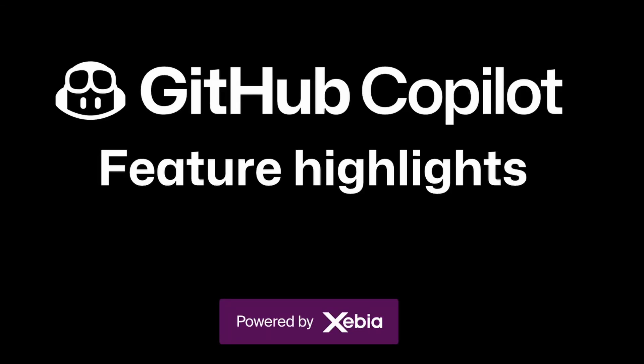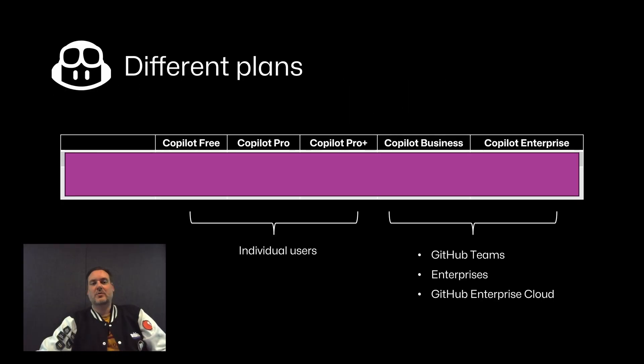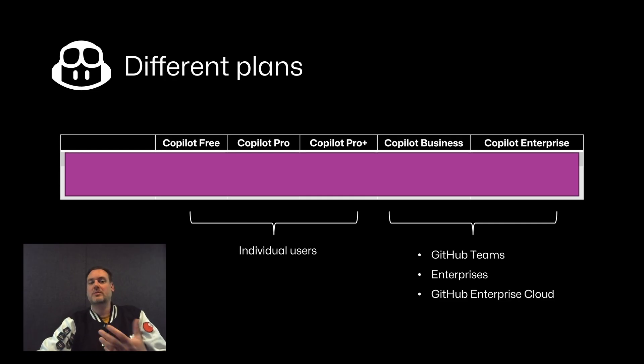Hey folks! This video is part of a series on GitHub Copilot feature highlights. To find the other videos, go to github-copilot.zebia.ms. In this video, I want to explain the different plans and how they relate to the different premium requests that we now have in GitHub Copilot, and what those premium requests are.